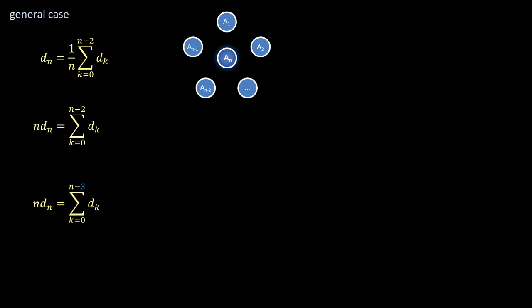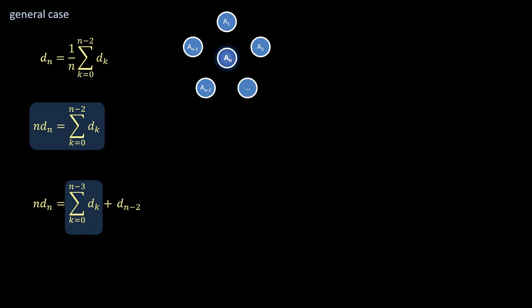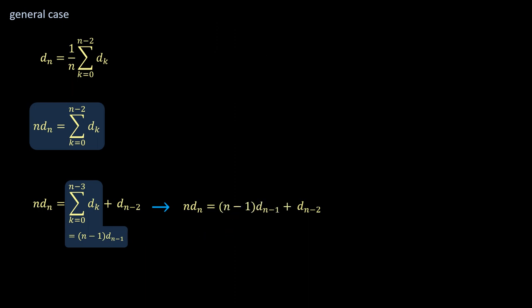And then isolate the final term from the sum, leaving a summation that can be plugged back into the previous line, so that the sum in the bottom line can be replaced by a single d term.